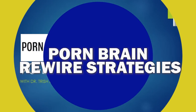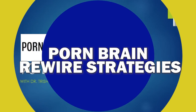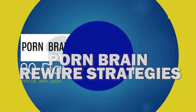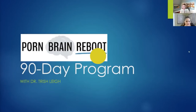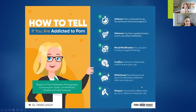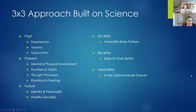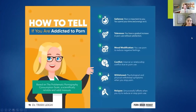Let's dig in — there are a couple of visuals here and I'm going to move through them and answer everybody's questions. So here are a few signs to tell if you have a problem: salience, tolerance, mood modification, conflict, and withdrawal.